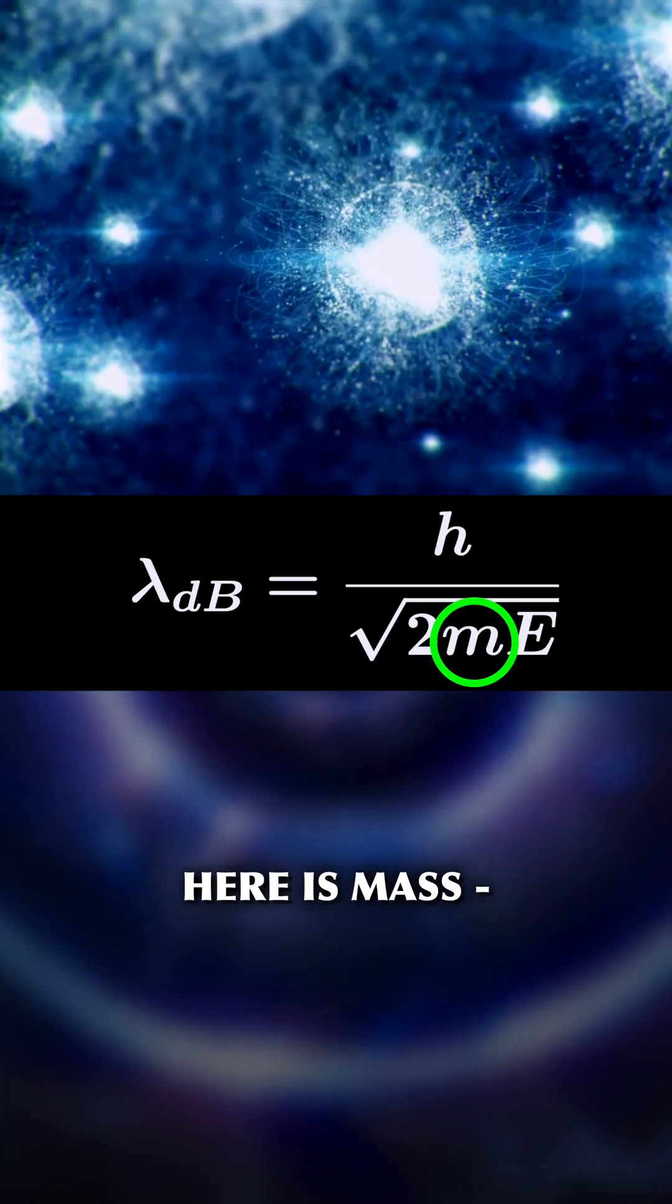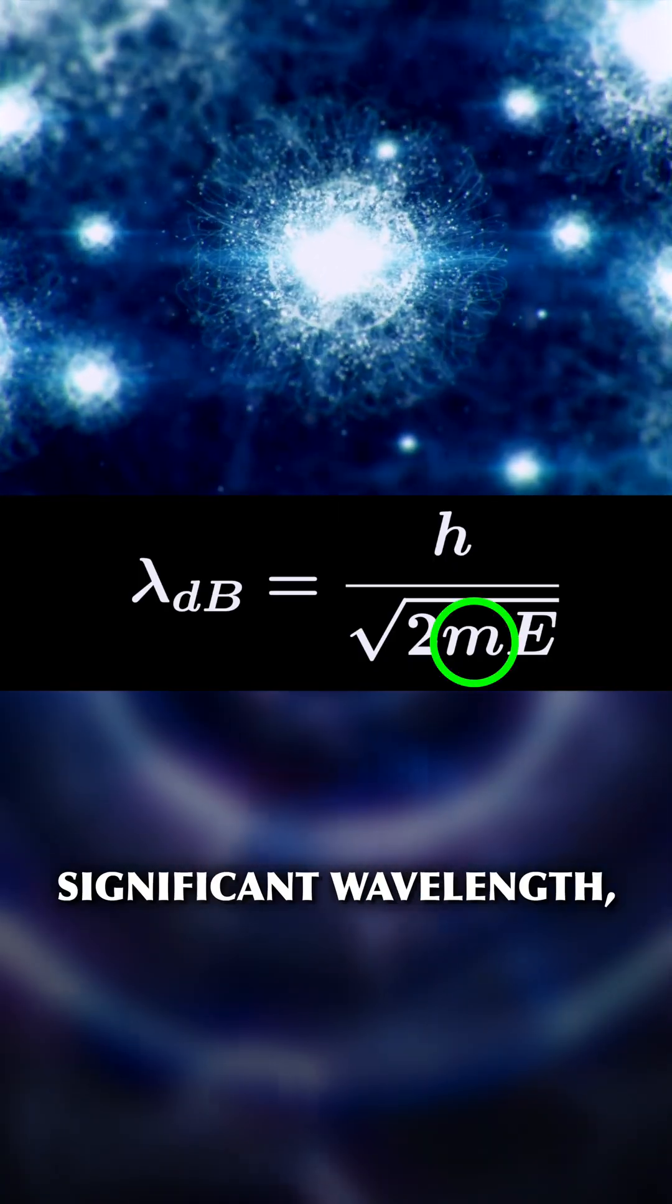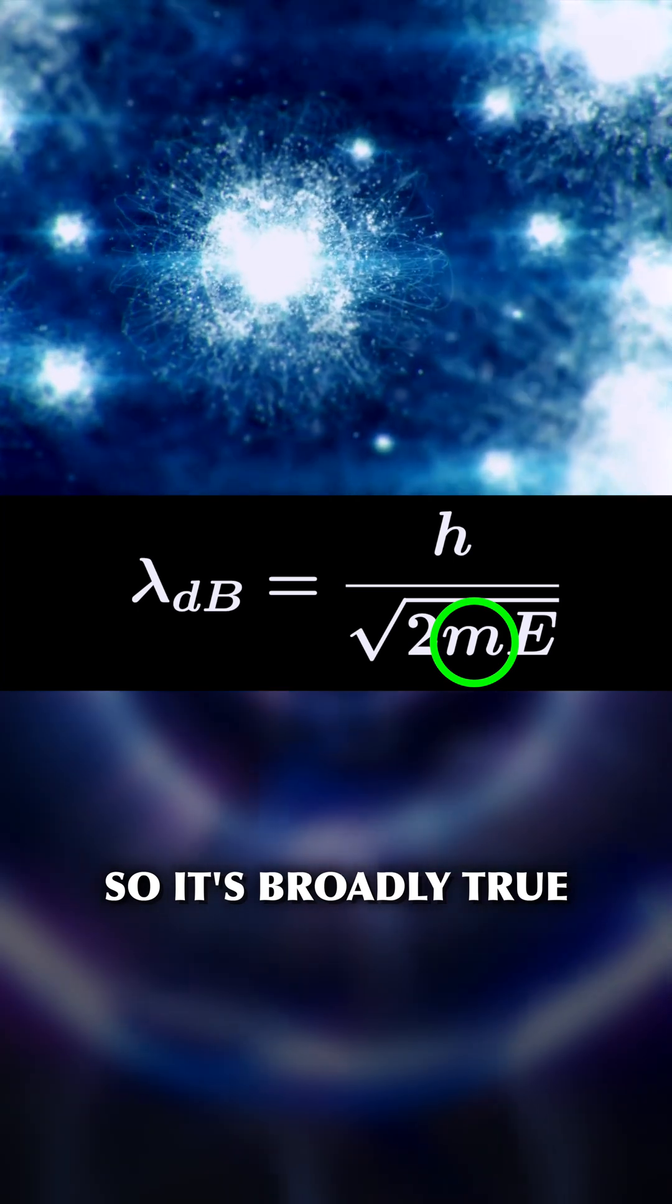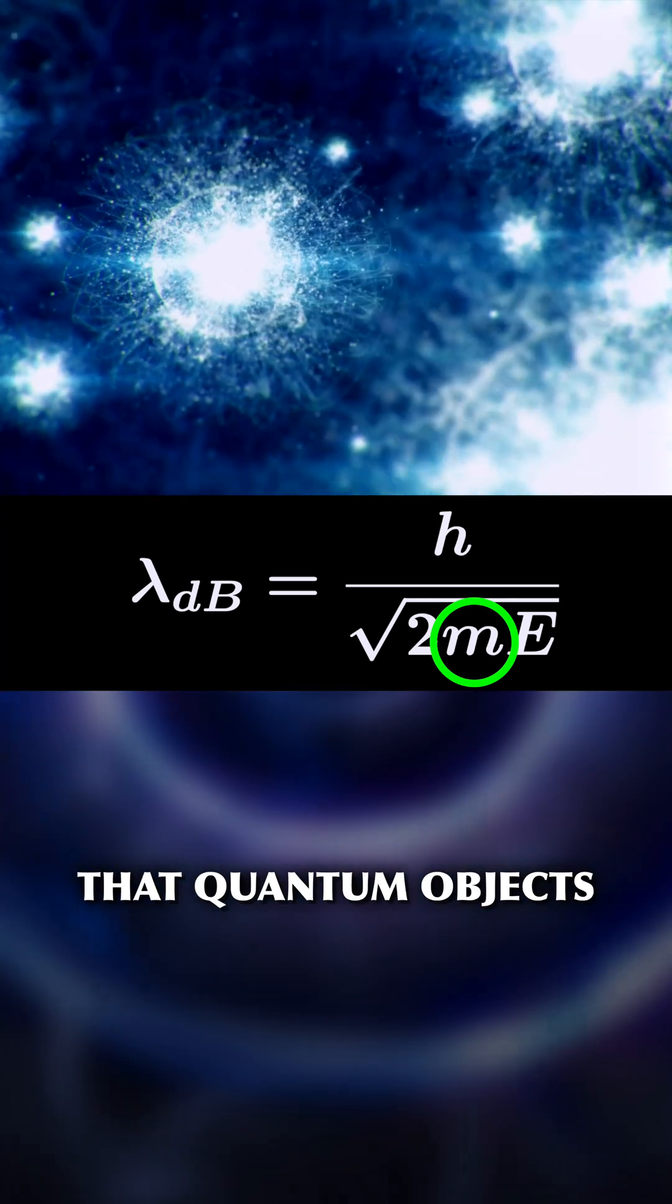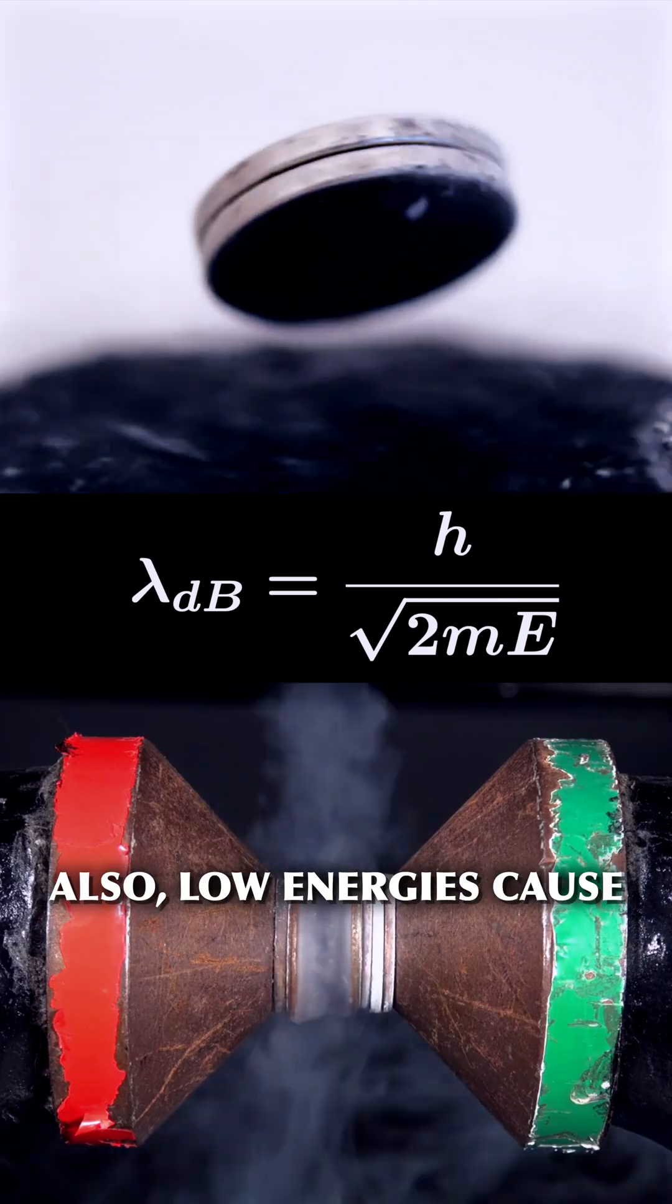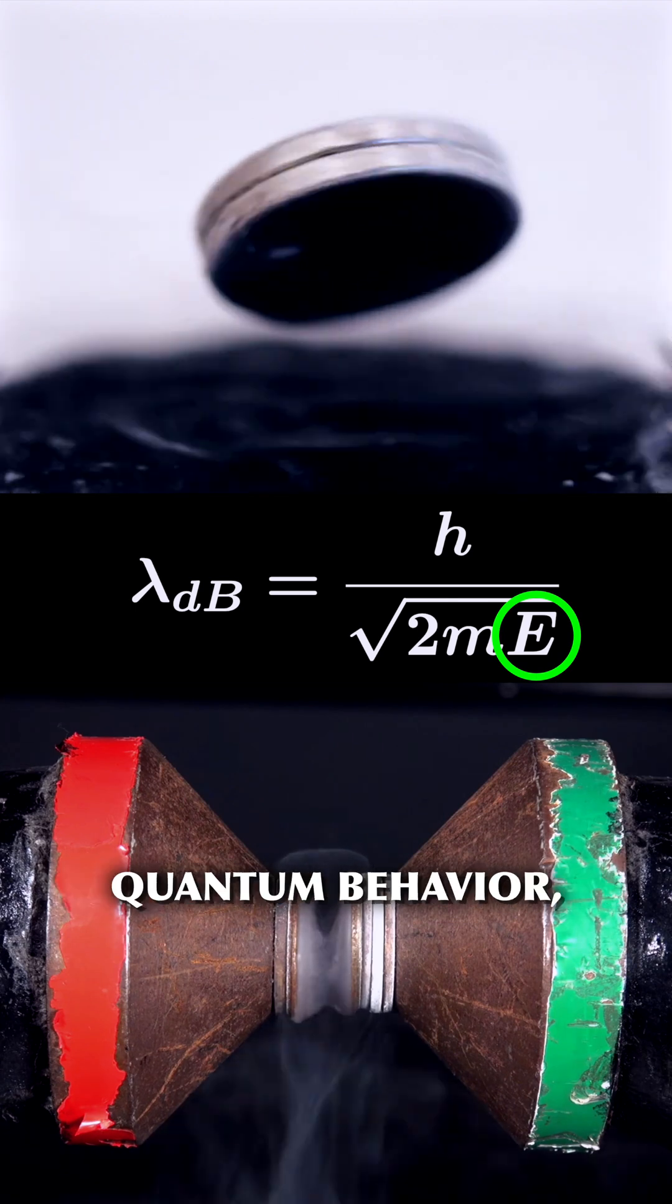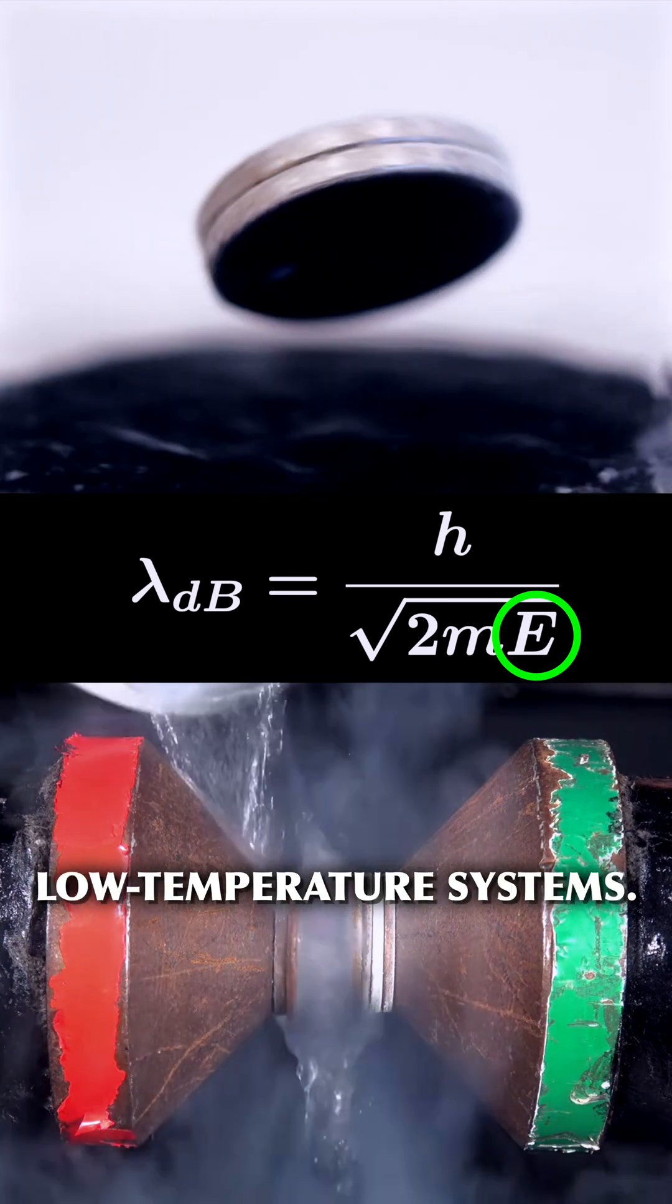One important factor here is mass. Small masses have a significant wavelength, so it's broadly true that quantum objects need to be small. Also, low energies cause quantum behavior. So, for example, low temperature systems.